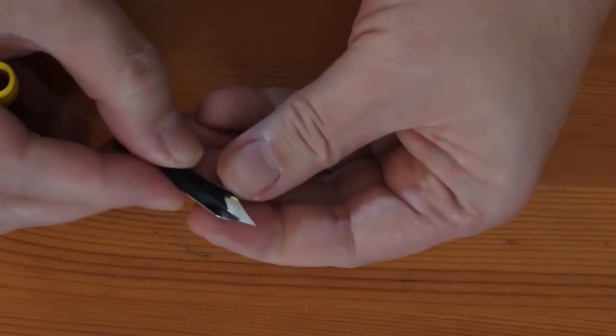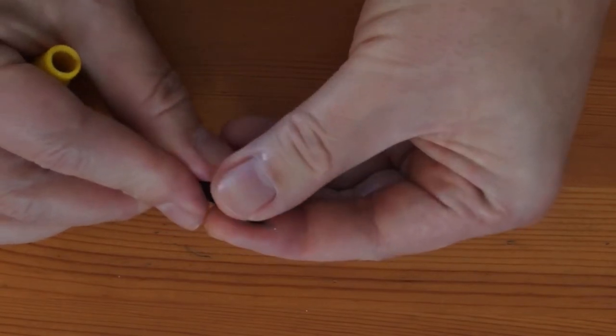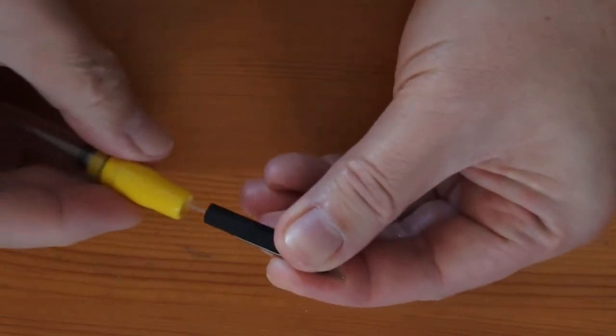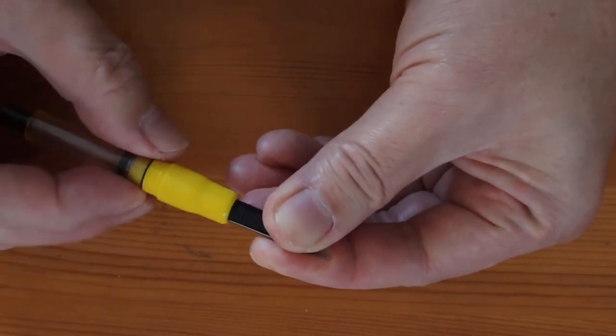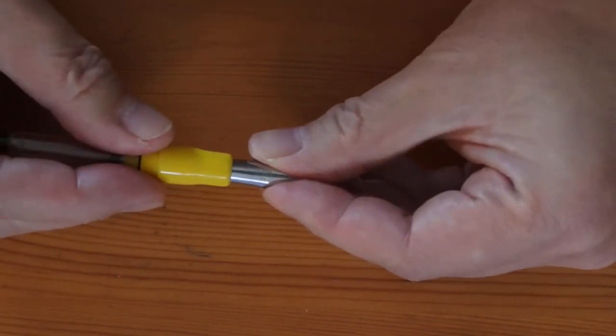With the feed and nib lined up, you can fit them into the section. The section has a slot for the nib, so it fits only one way. And that means there's only one correct position for the nib.